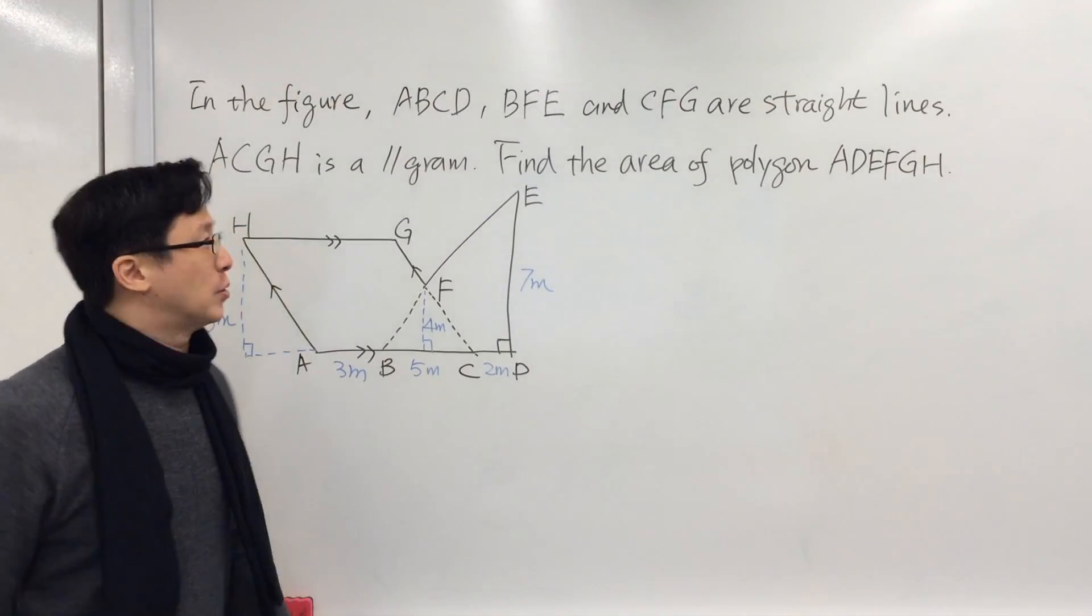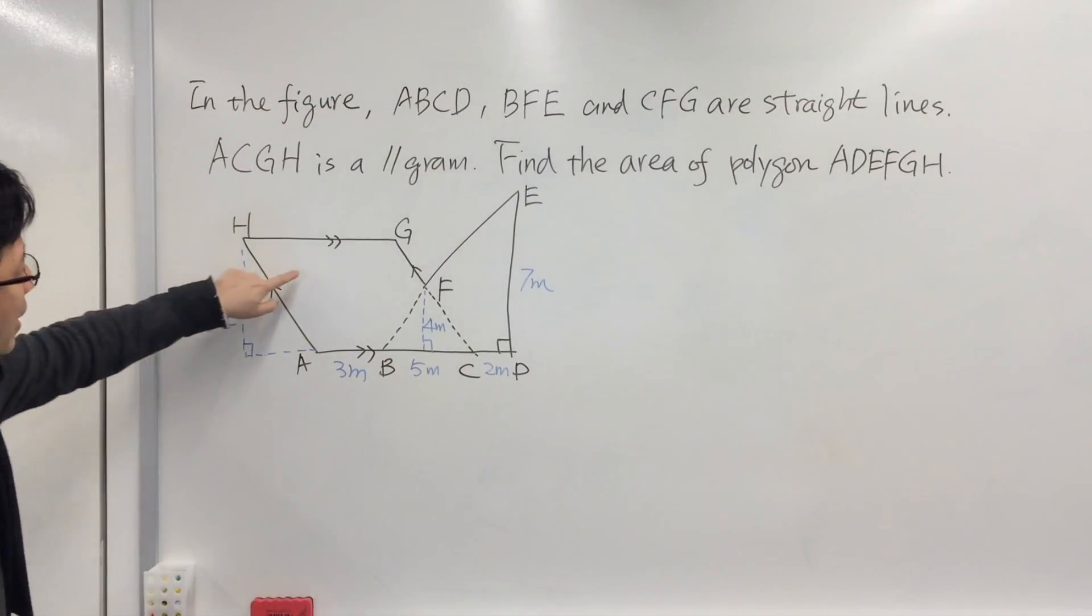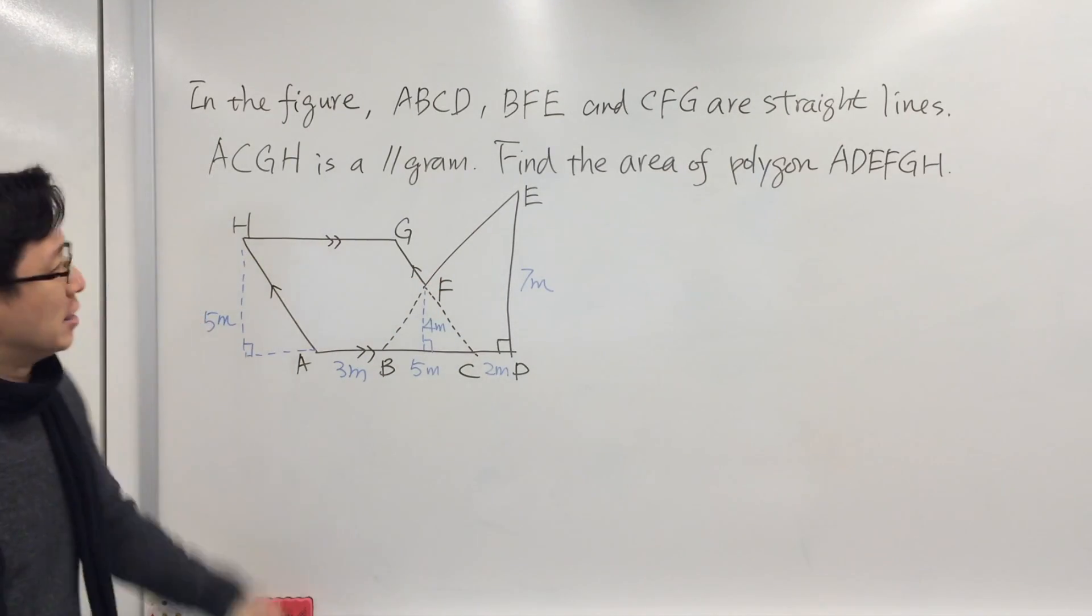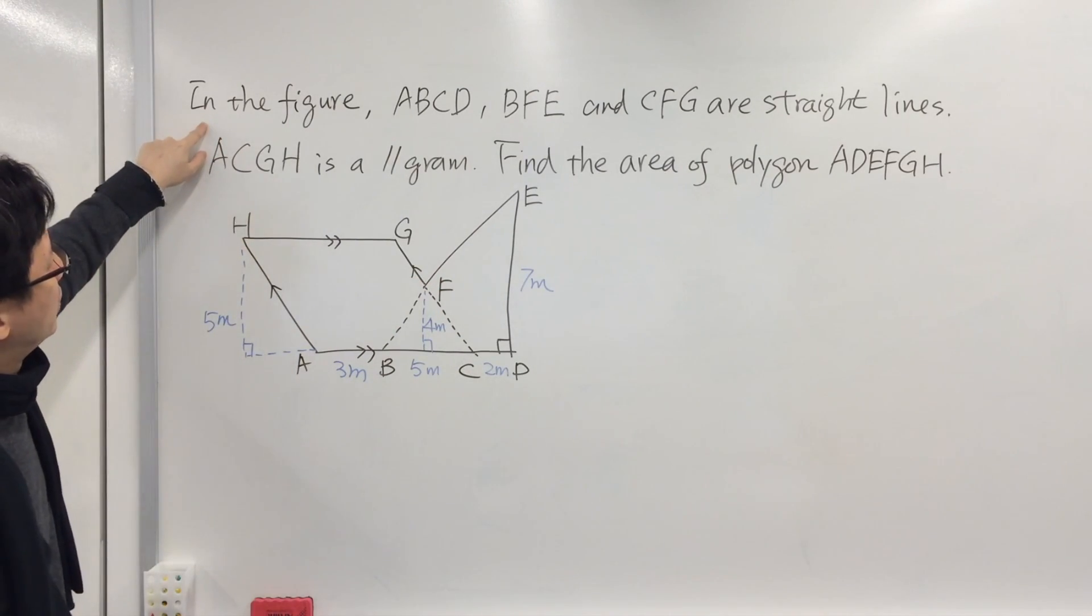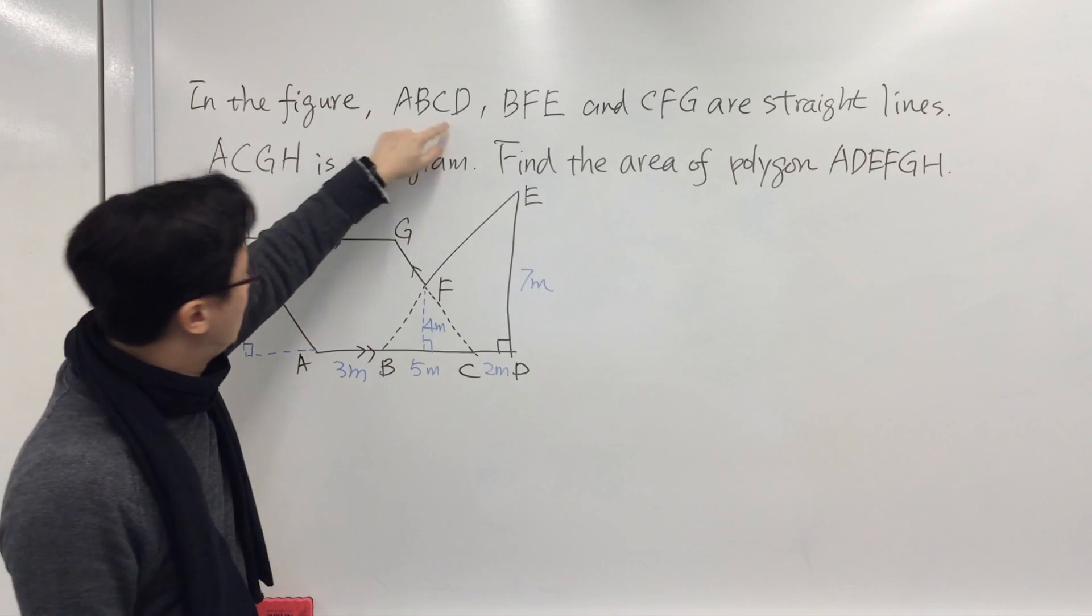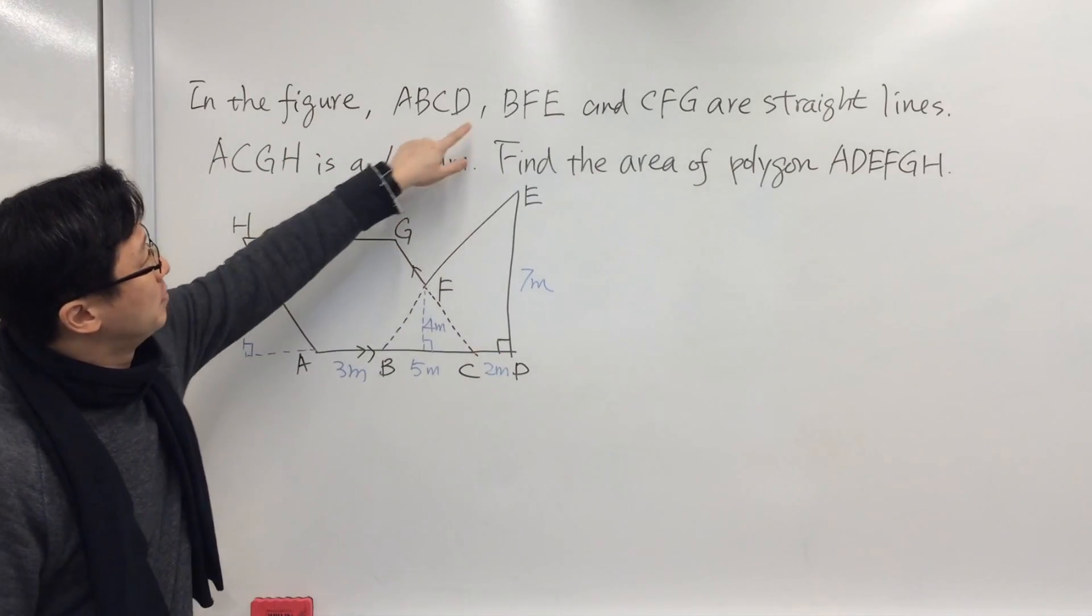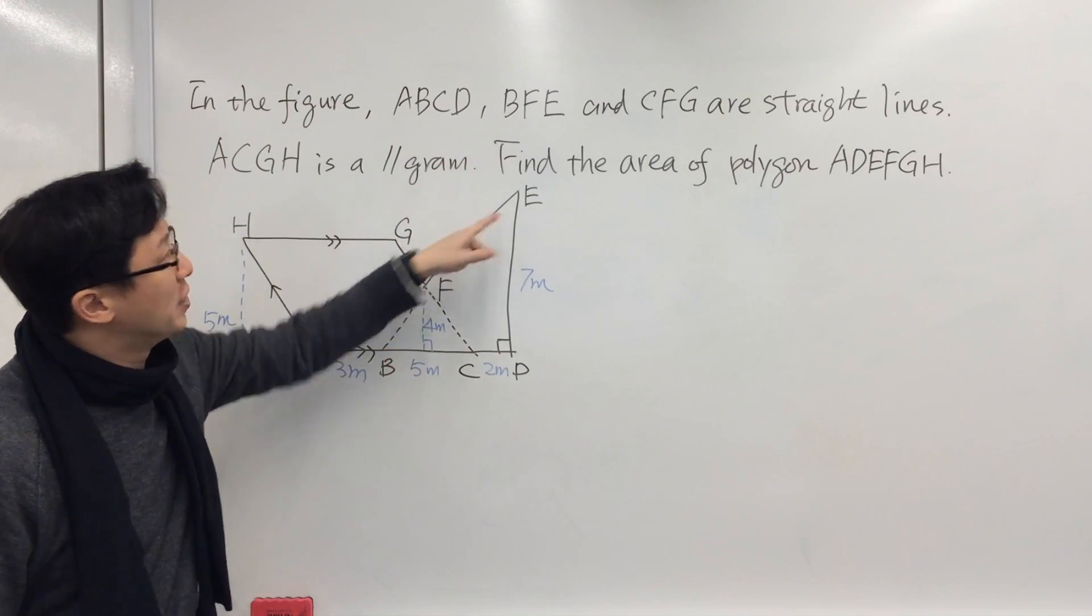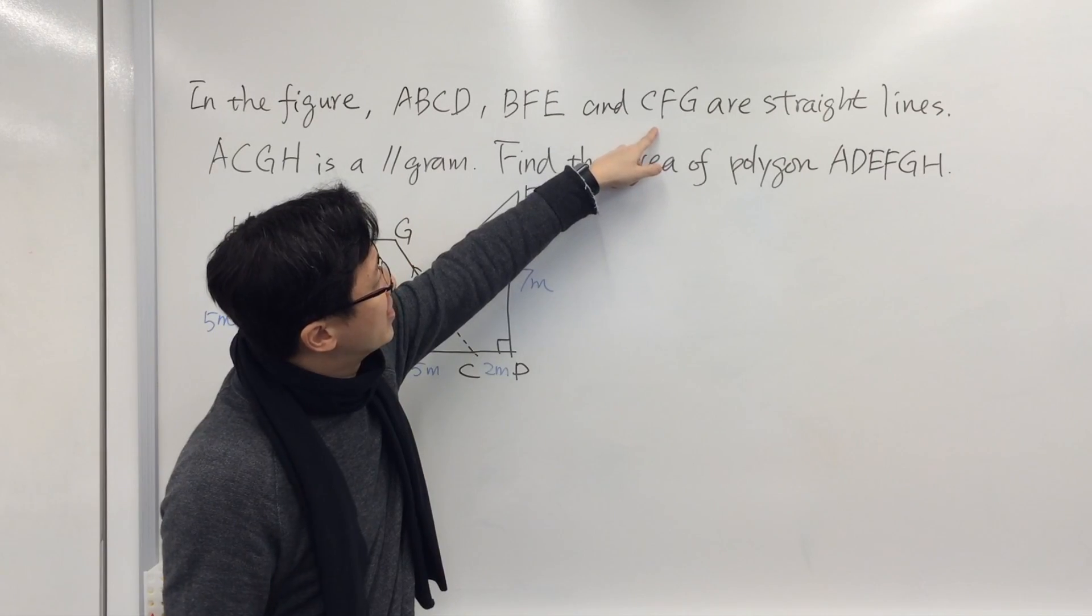Hello students, today we are going to talk about finding the area of this figure. Let's look at an example. In the figure, ABCD is a straight line, BFE is also a straight line, and so is CFG.